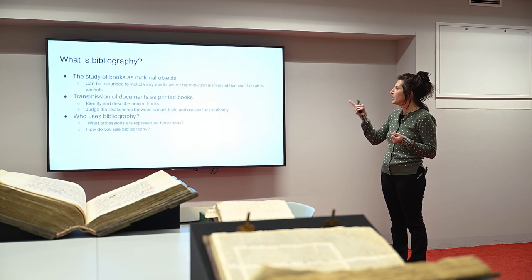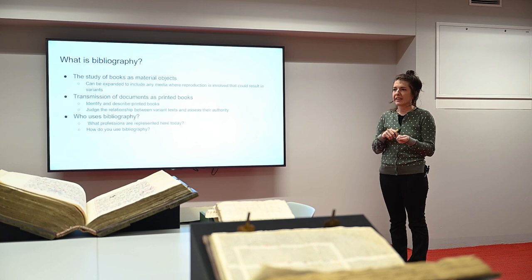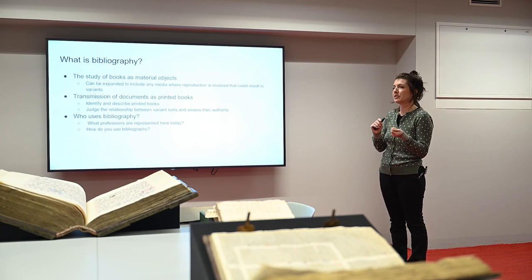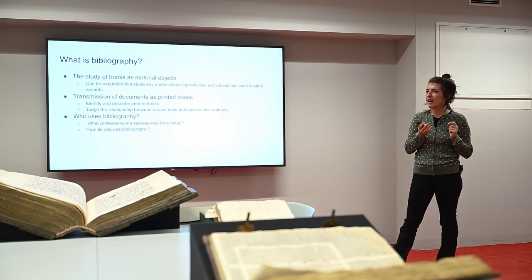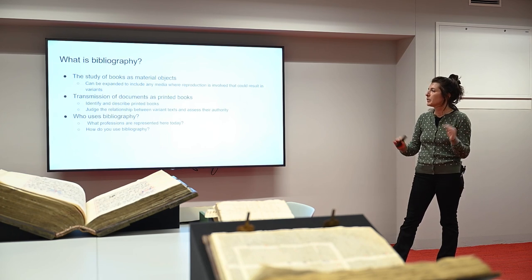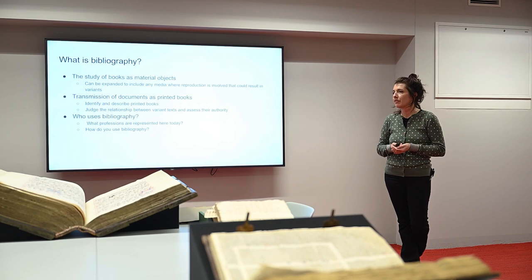Here are some typical definitions. The study of books as material objects, which can be expanded to include any media where reproduction is involved that could result in variance — that helps address the question about whether a photograph or a visual depiction is a text. This definition argues it has to be reproducible to result in variance. I'm not sure I completely agree with those parameters, but reproducibility is a really interesting way to define bibliography. For instance, you could reproduce a sound recording — is that a text? You might sing it yourself or record a recording, which would create a variant.